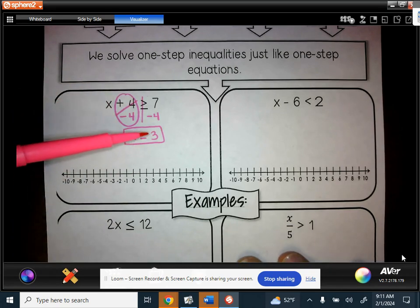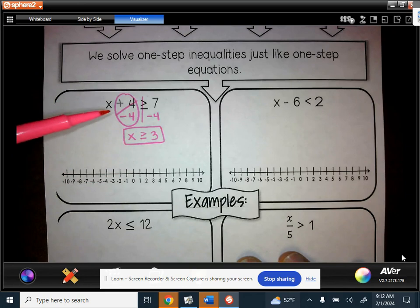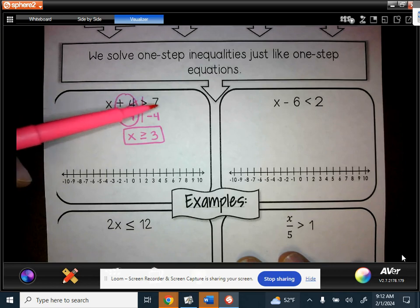Now you still want to plug it in. So you have to pick something that is greater than or equal to 3. So 3 could work, or 4. Let's try 4. 4 plus 4 would be greater than or equal to 7. And if we tried 3, 3 plus 4 would be equal to 7. And since it has the line, that works.